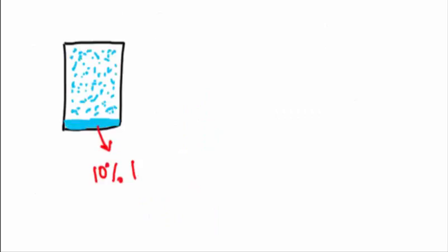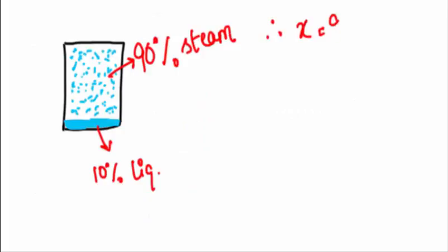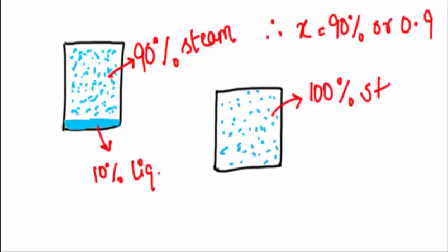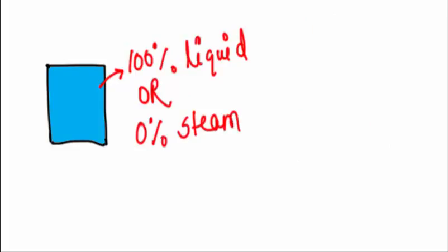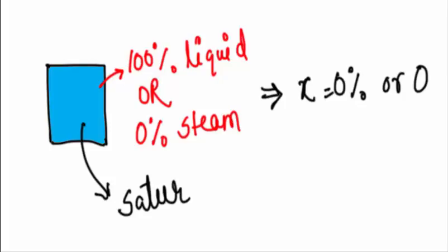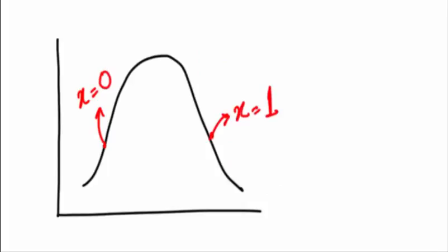If there is 10% liquid and 90% steam, the dryness fraction is obviously 90% or 0.9. If there is 100% steam, x is equal to 100% or 1 and this steam is called saturated steam. If there is 100% liquid or 0% steam in the container, then x must be equal to 0% or 0 and this liquid is called saturated liquid. So in the saturation dome here, the value of x is 0 since there is no steam at saturated liquid point. Here the value of x is 1 since here we have 100% steam, and in the wet region the value of x lies between 0 to 1.